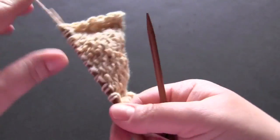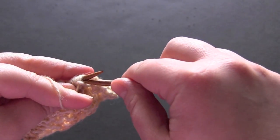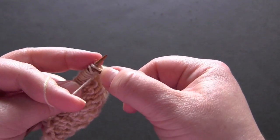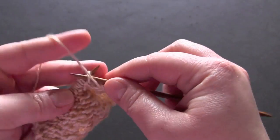And for row four, again, you're just going to purl all of your stitches.